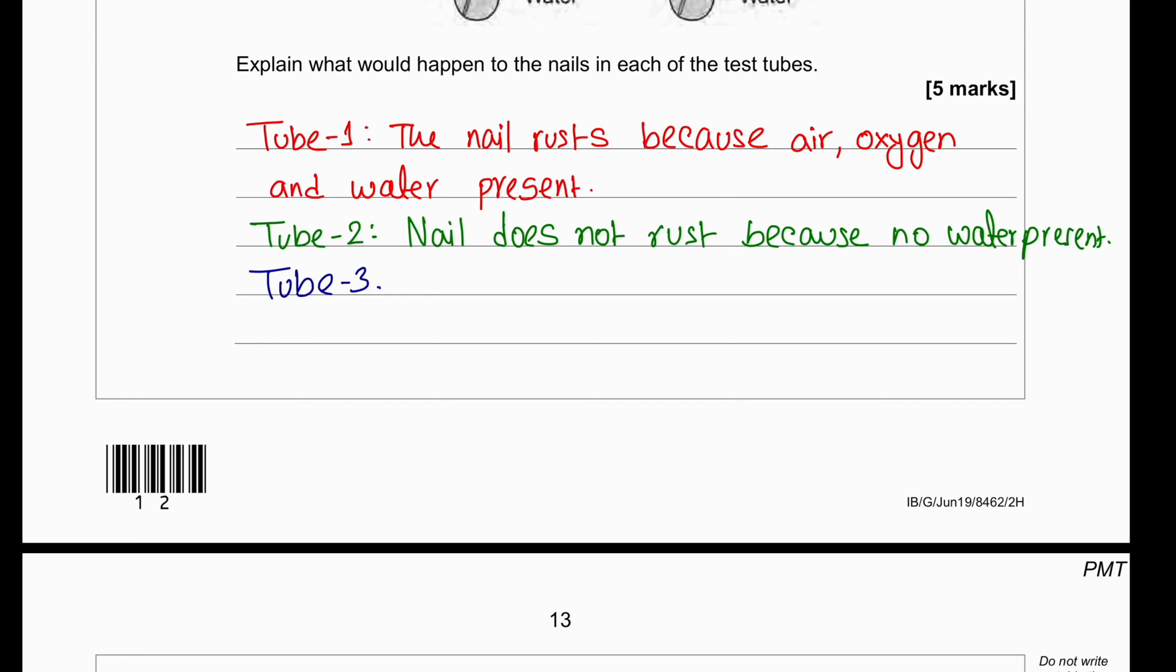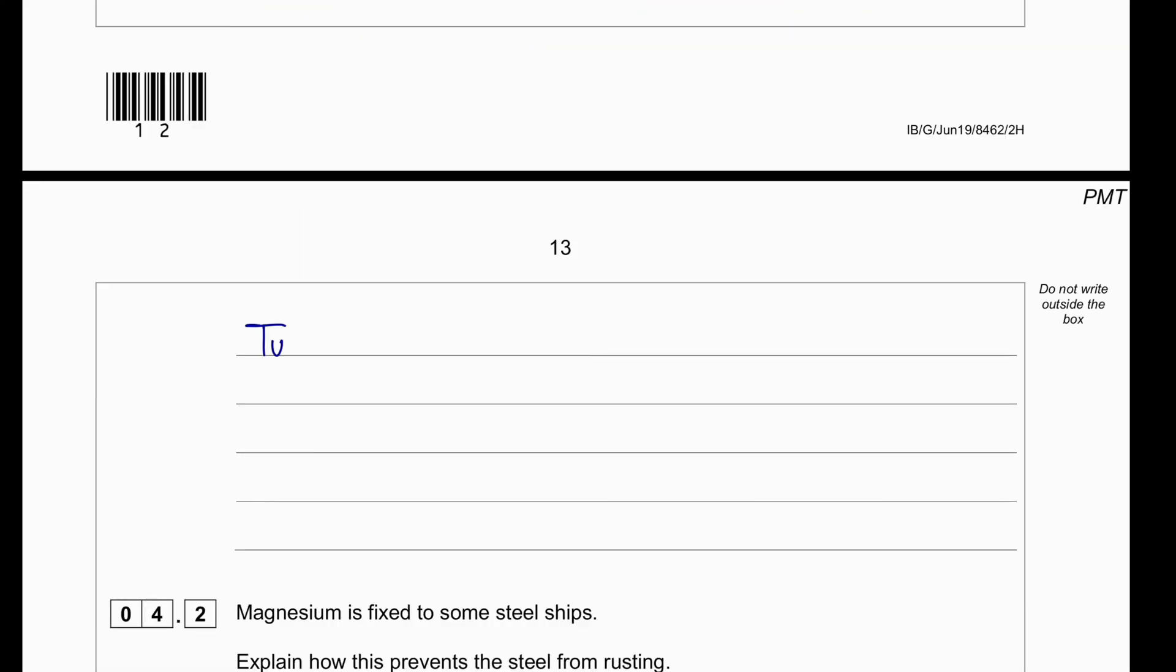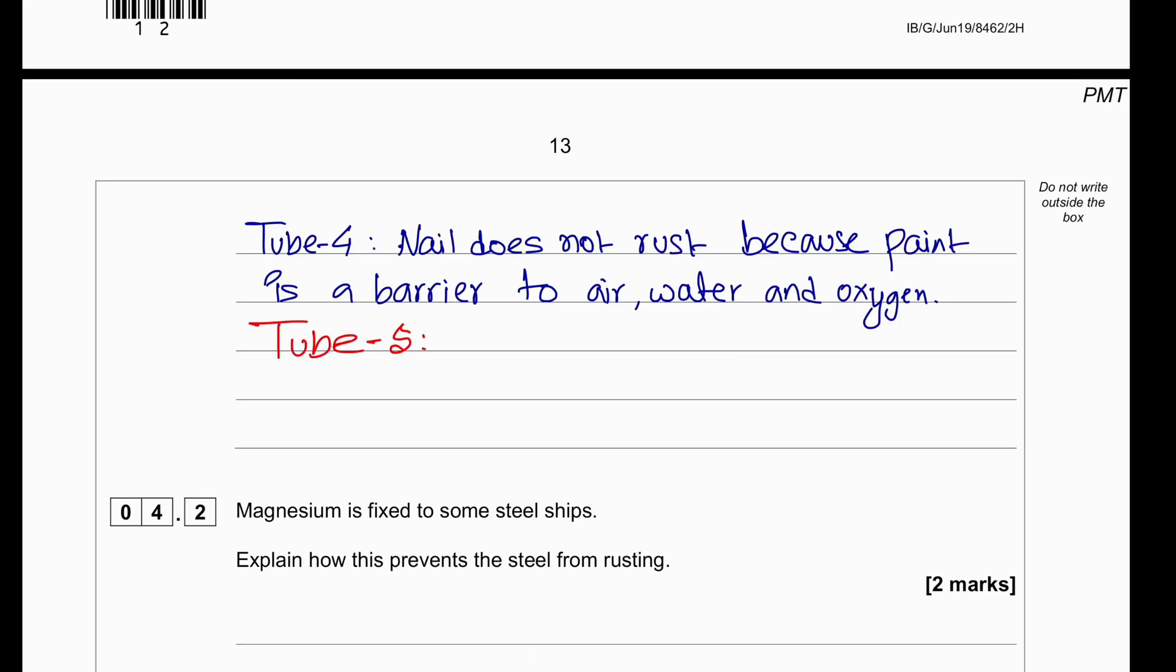In terms of nail three, in boiled water, as I have already told you, there is no air or oxygen in boiled water. So, it will not be able to rust. The oil layer will prevent oxygen from coming into the water as well. Then in tube four, the nails do not rust because paint is a barrier to the water. In tube five, the nail does not rust because stainless steel are resistant to corrosion.